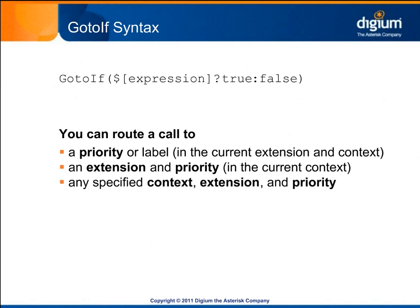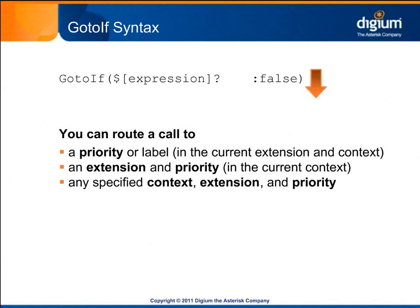The parameters of GoToIf are not separated by commas. Instead, a question mark separates the expression from the destination to route to if true, and a colon separates the true destination from the false destination. If no destination is present for the resulting value of the expression, the dial plan execution will continue in the next priority of the same extension and context.